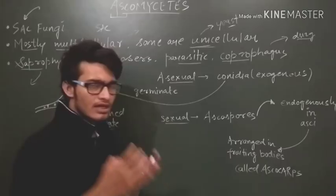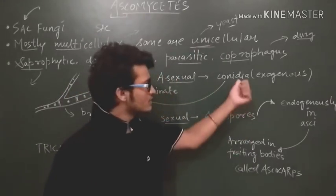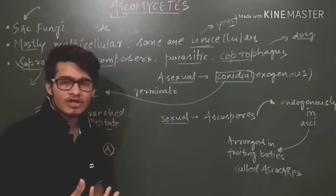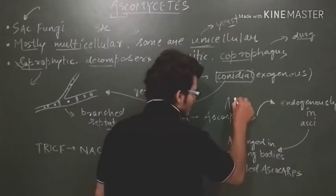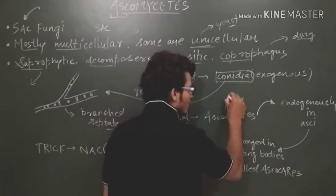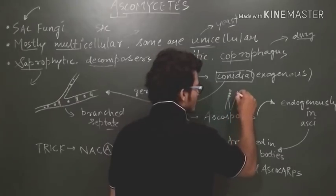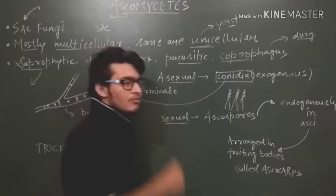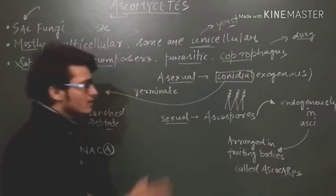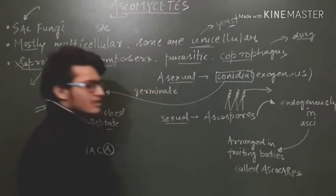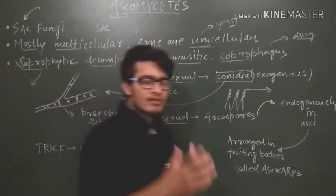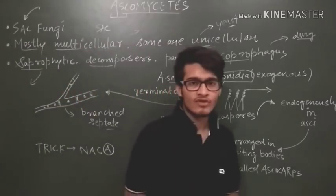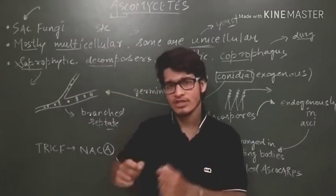Like all other different fungi, this class also reproduces via different modes of reproduction. It can be asexual, it can be sexual. The asexual reproduction is due to some important spores called conidia. Exogenously produced - exogenous means outside the body. So there are some special structures and conidia are produced over here. On those conidiophores the conidia are produced in an exogenous manner, and those conidia will be dispersed and germinate to form the mycelium.